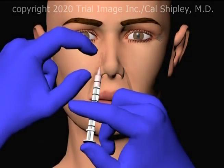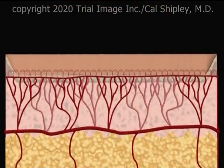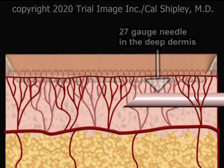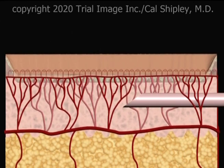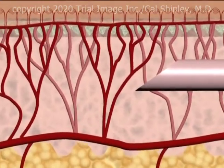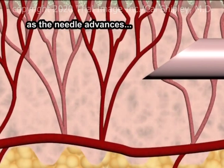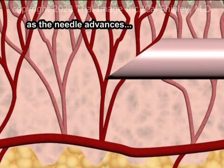Let's examine the mechanism of embolism in dermal filler injections. The technique employed in dermal filler injections involves the insertion of a relatively fine needle, often 27 gauge, into the deep dermis beneath the wrinkle being treated. As the needle advances, it may shear off one or more arterioles among the dense web of blood vessels present in the deep dermis.